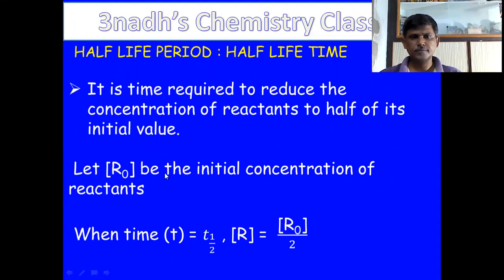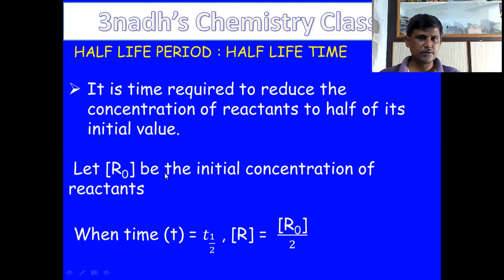What is the half-life period or half-life time? It is the time required to reduce the concentration of reactants to half of its initial value. It is denoted by T half. Let R0 be the initial concentration of reactants. Then at half-life, the concentration of reactants will be half of the initial concentration, that is R0 by 2.